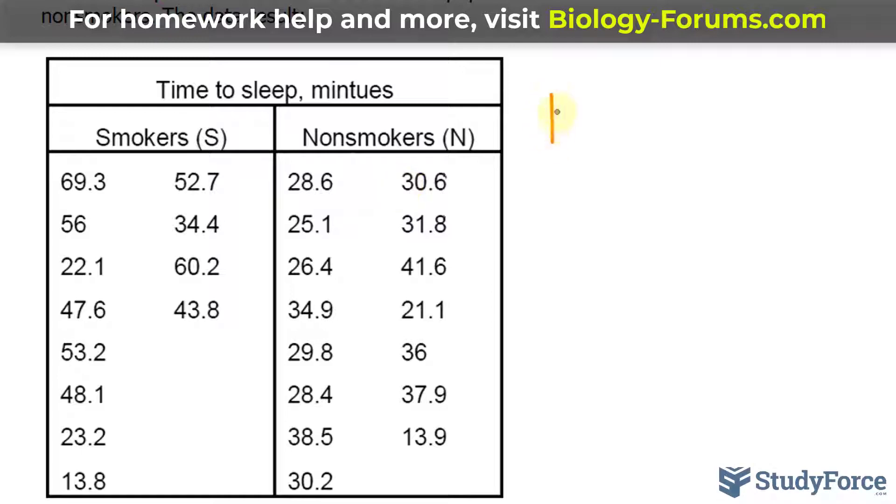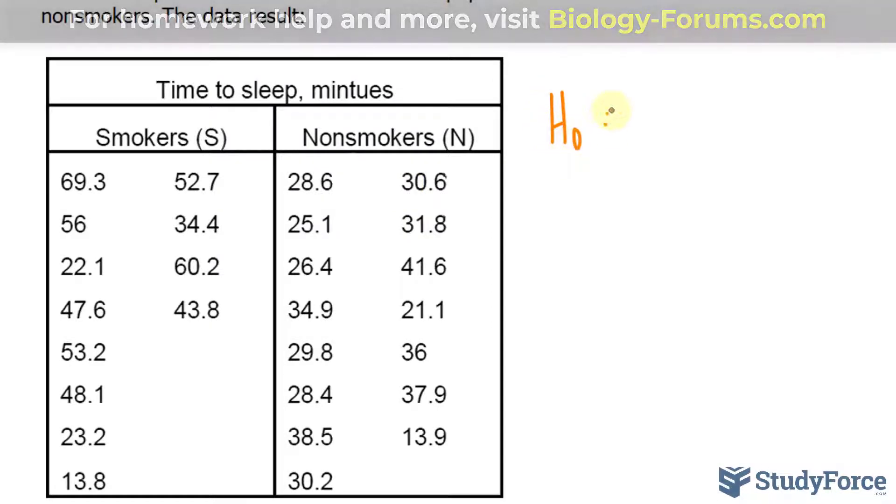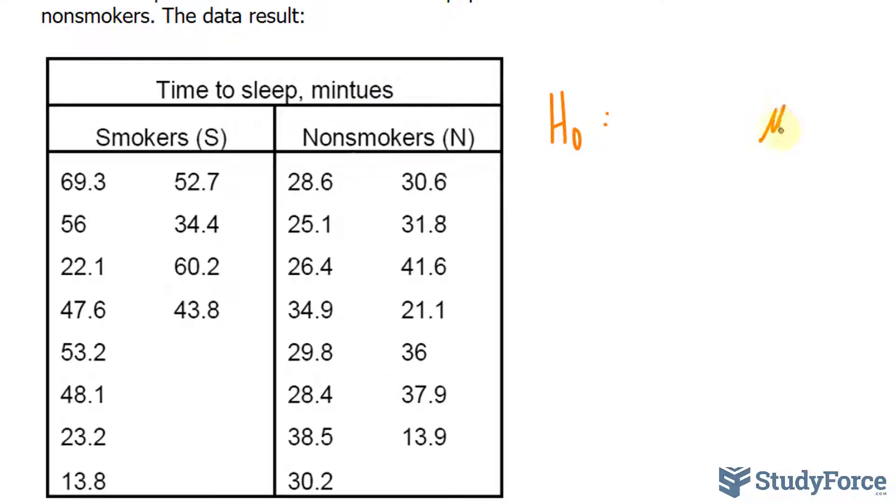The null hypothesis is that the median of the non-smokers, represented using this tilde symbol, is greater or equal to the median of the smokers. So this is what we're expecting not to find. What we are expecting to find is that the median of the smokers is greater than that of the non-smokers. So we're expecting that it takes smokers a longer time to fall asleep.